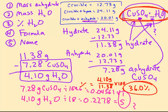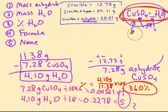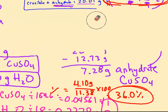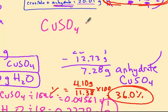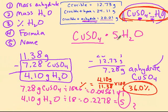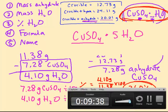Alright, so now I ran completely out of space, so let me erase this middle part here. And the formula would be CUSO4·5H2O. So this would be cupric sulfate pentahydrate, or copper 2 sulfate pentahydrate. So there's those calculations. Thank you very much.